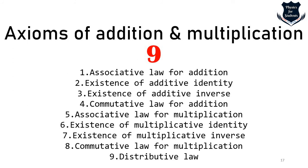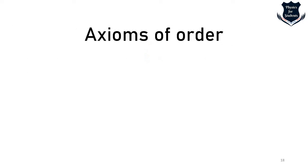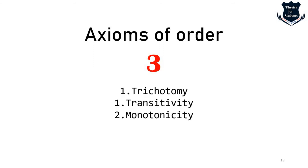This video will primarily concern axioms of addition and multiplication, but just to tell you there are nine axioms of addition and multiplication: associative law, existence of additive identity, additive inverse, commutative law, associative law for multiplication, and so on — all the way to the distributive law. There are also axioms of order, of which there are three: trichotomy, transitivity, and monotonicity. My basic objective is to let you know what the axioms of addition, multiplication, and order are.